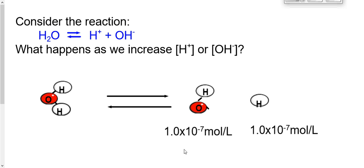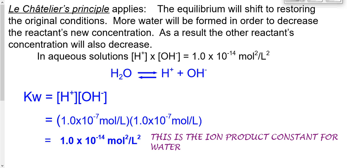We know we're going to have an equal amount of hydroxide ions and hydrogen +1 ions. What happens if I add more hydrogen ions or more hydroxide ions to this equilibrium situation? Le Chatelier's principle applies — the equilibrium will shift to restore original conditions. If I add more hydrogen, that extra hydrogen will react with some of the hydroxides to make more water. Same if I add more hydroxides — the excess hydroxide reacts with hydrogen to make more water.